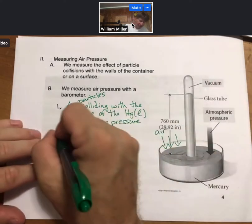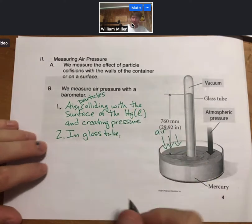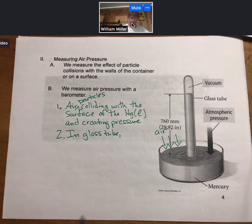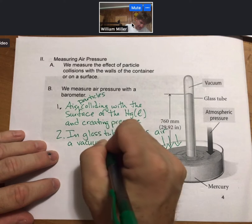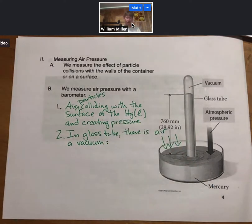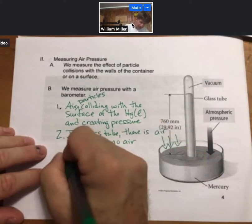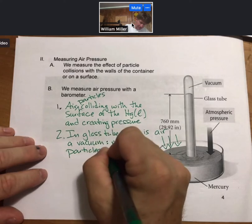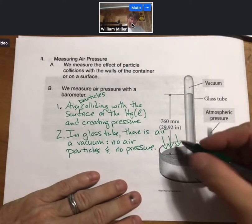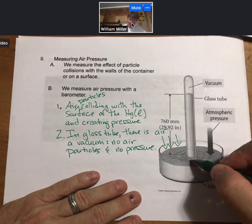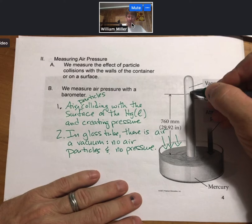And here in the vacuum, in the tube, in the glass tube, there is a vacuum. There are no air particles and no pressure. And so there's pressure pushing down on the liquid pool of mercury. There's no pressure pushing down on the mercury in the tube.